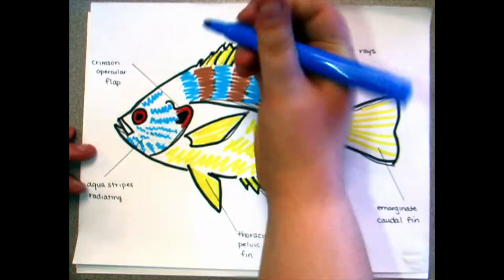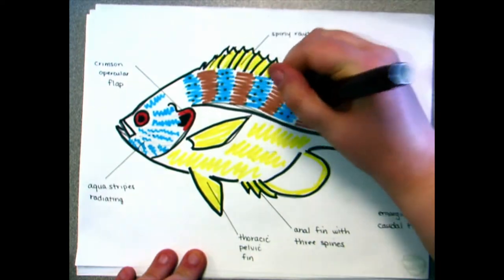Pumpkin seed are sexually dimorphic. Males are larger and their colors intensify during breeding, while females are paler and have more distinguished vertical bars.